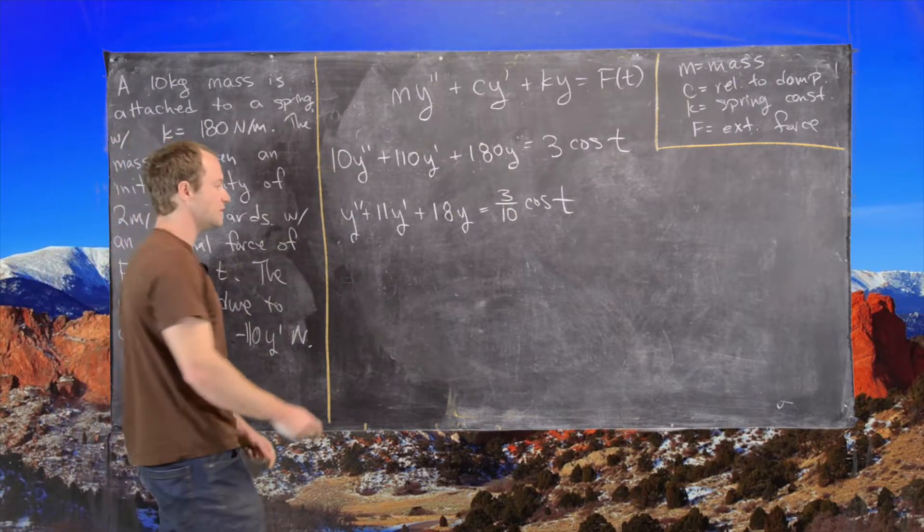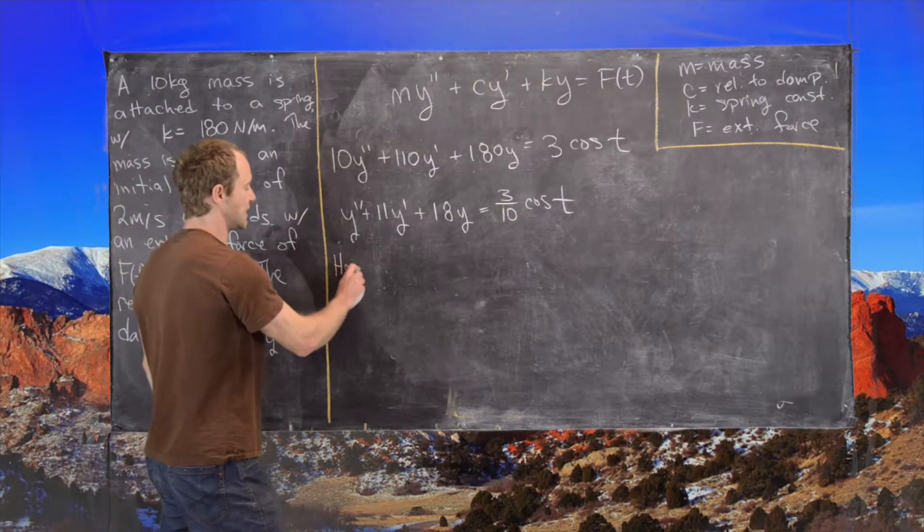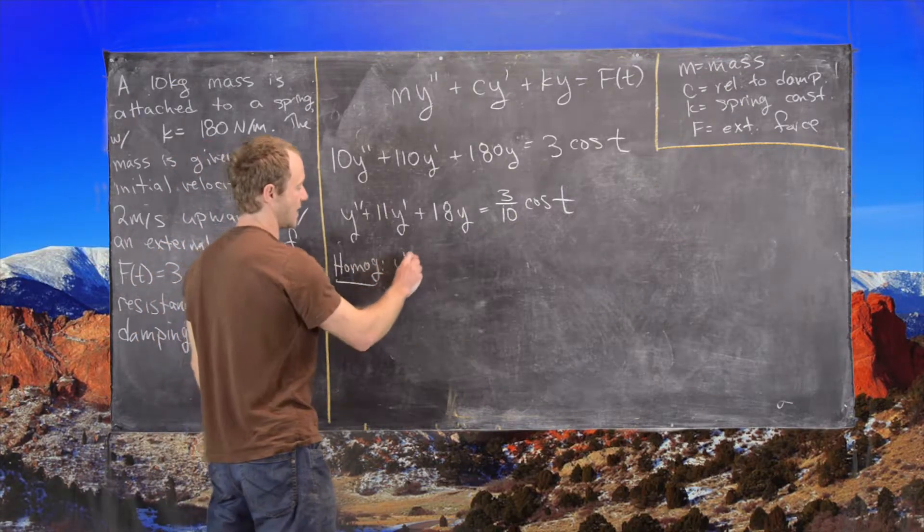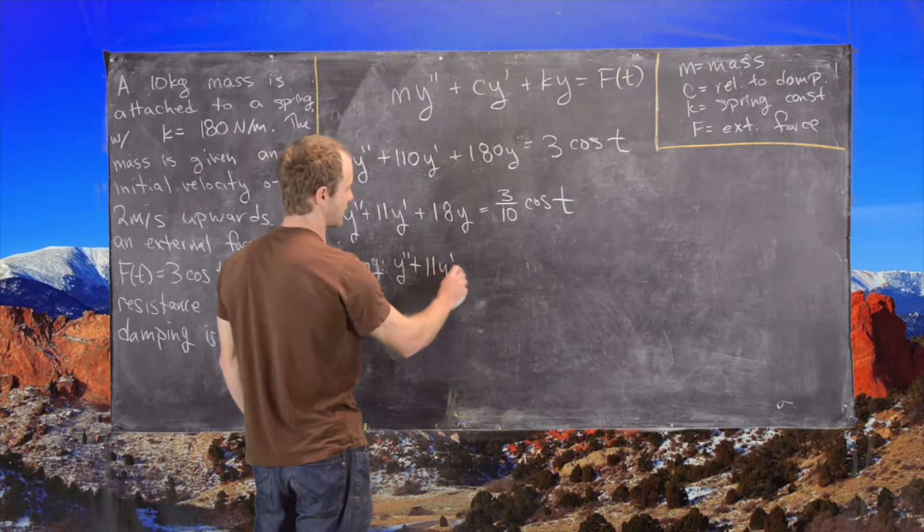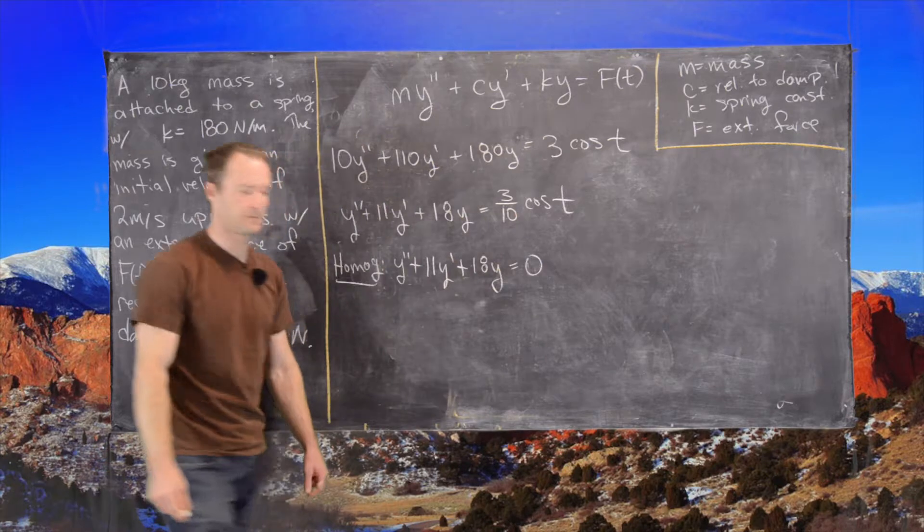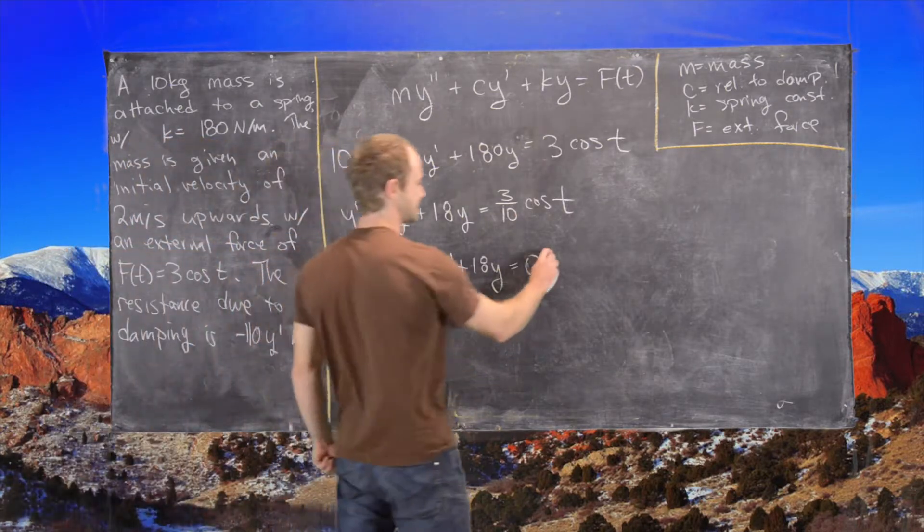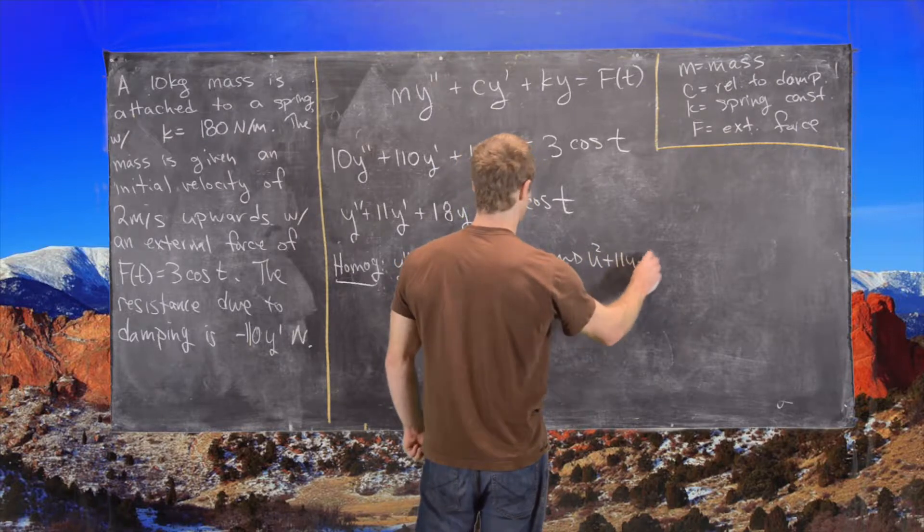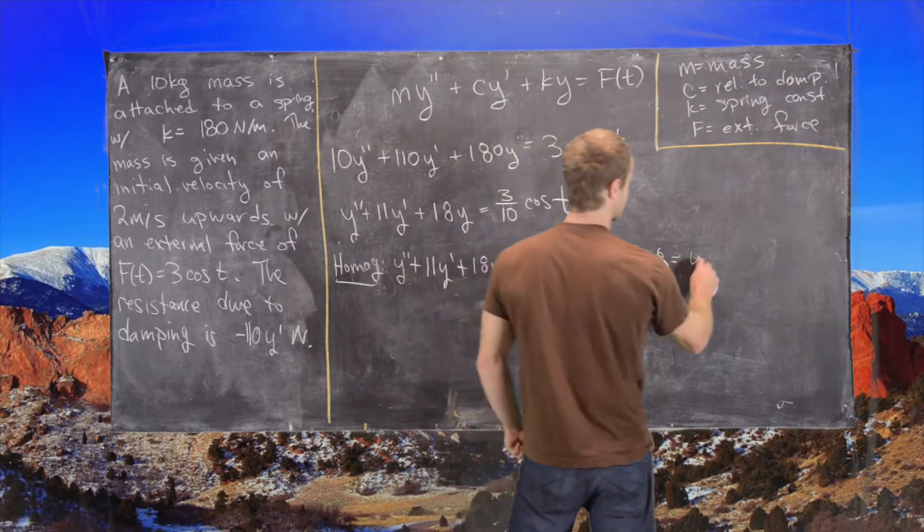So what we would do is we would look at the corresponding homogeneous solution. And so that's given by y double prime plus 11 y prime plus 18 y equals 0. We would look at its polynomial. So that would be u squared plus 11 u plus 18, which factors like